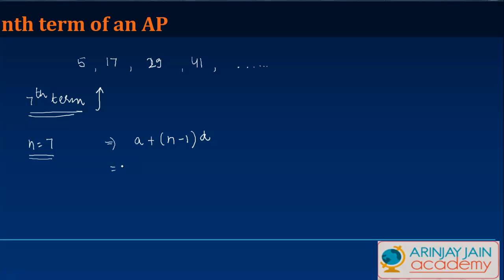And we know that nth term can be found out by A plus n minus 1 times D. Now in this case, A is the first term. So if you look at this arithmetic progression, the first term is 5.